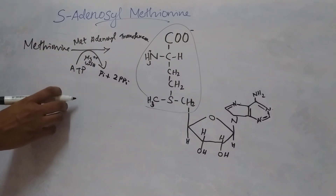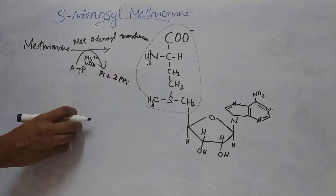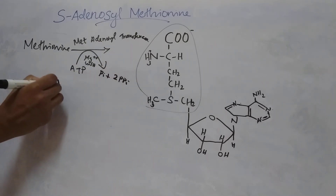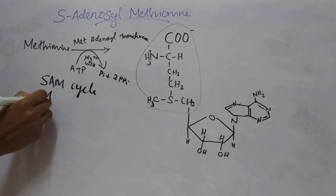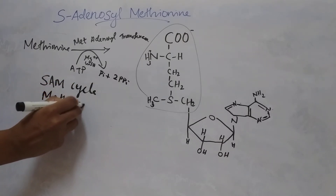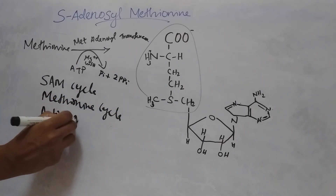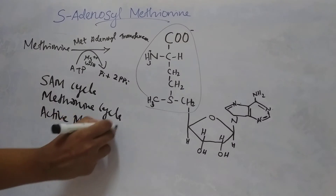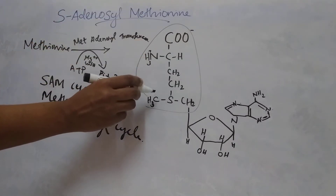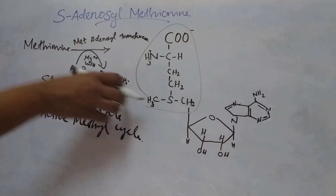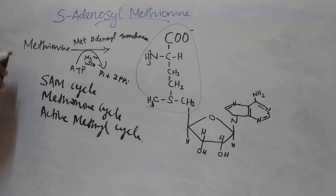The reactions that produce, consume, and regenerate S-adenosyl methionine are called the S-adenosyl methionine cycle, or methionine cycle, or active methyl cycle. In this cycle, methionine is produced, consumed, and regenerated.